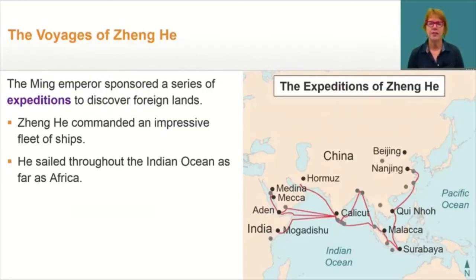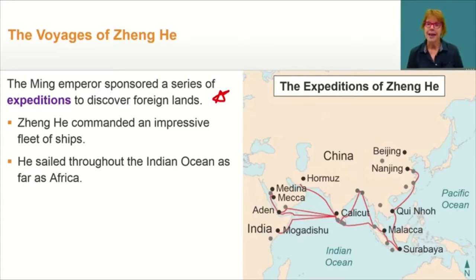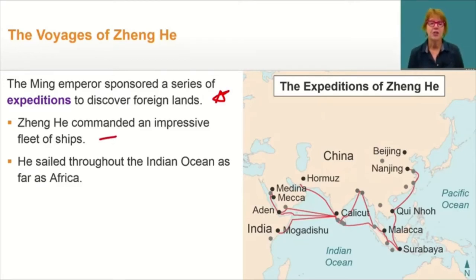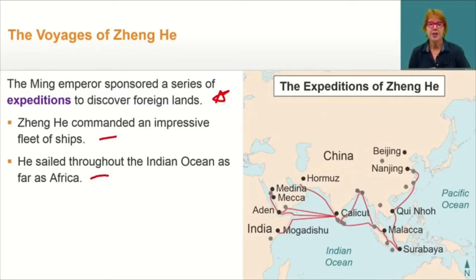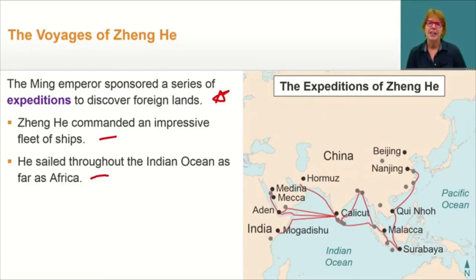The Yongle Emperor, son of Hongwu, thought it was important to increase China's wealth and influence, and sponsored a series of expeditions to discover foreign lands. Zheng He, a Muslim and a skilled navigator, commanded an impressive fleet of highly advanced ships — some as large as a football field, five to six times larger than the ones Columbus used to sail to the Americas. He sailed throughout the Indian Ocean as far as Africa, bringing back goods and animals, including the giraffe, and spreading Chinese culture while encouraging other countries to buy Chinese goods. In a series of seven voyages between 1405 and 1433, he reached as far west as Africa — Europeans would not be able to sail around Africa until 50 years later. China's accomplishments in exploration and navigation were impressive, but they would not last.